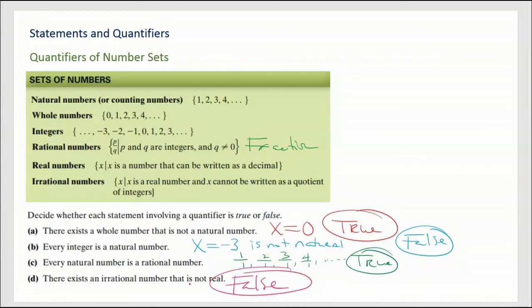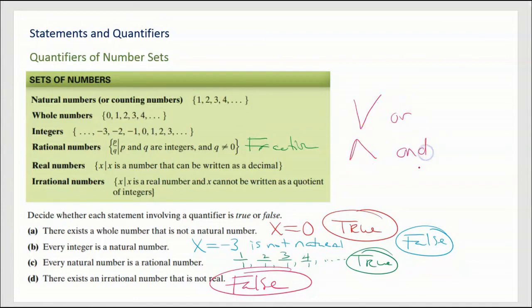All right, that wraps it up — all about statements and quantifiers. Negation really is the hardest part of this, along with learning the symbols. To recap: the symbol ∨ is 'or,' ∧ is 'and,' and ~ is 'not' or the negation symbol. I hope you have a wonderful day.